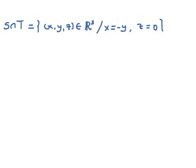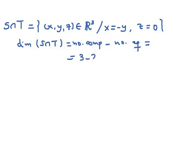To calculate a basis in a vector subspace, we first need its dimension. The dimension of this vector subspace is the number of components minus the number of equations, which is 3 minus 2, equal to 1. So we need one vector to form a basis in this vector subspace.